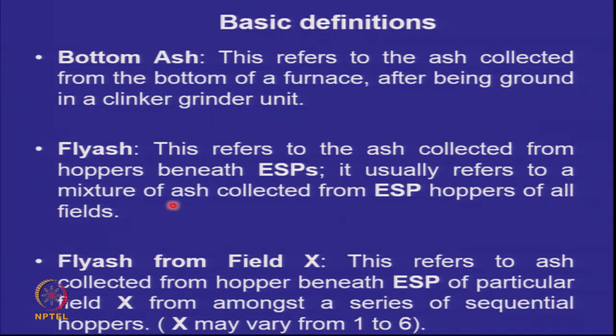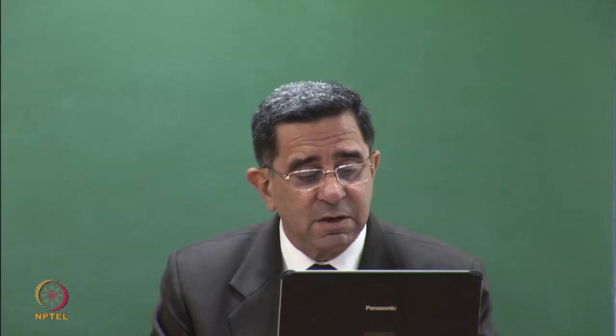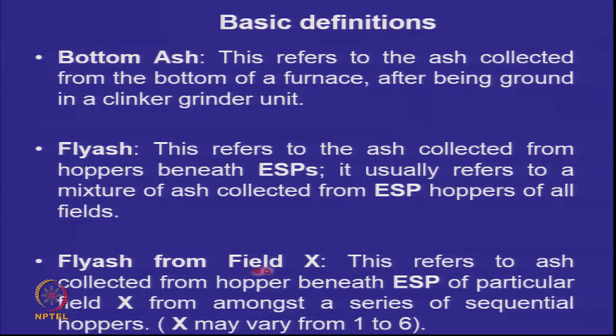Fly ash is the mixture of ash collected from all the hoppers beneath the ESPs. With 5 or 6 fields, the ash produced varies in size from coarser in field 1 to finer in field 6. When sending ash to a pond, all fields are typically mixed together, though they can be collected individually. When the term 'fly ash from field X' is used, it refers to ash from the hopper of that specific field; the finest ash with the finest particles comes from field 6.